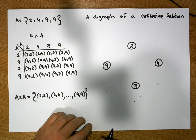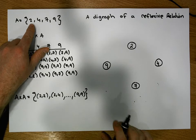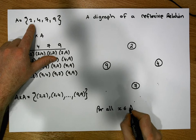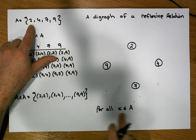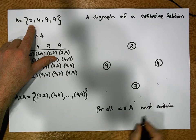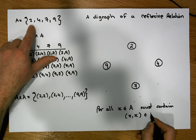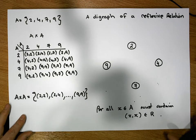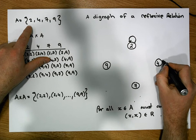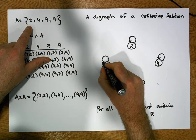Our question is: what does a reflexive relation look like? At minimum, a reflexive relation must contain, for all x that is an element of the set the relation is built on — in our case A — the pair (x,x). So it must contain the pairs that look like (x,x) for all elements. We must have a self-loop on 2, a self-loop on 4, a self-loop on 7, and a self-loop on 9.